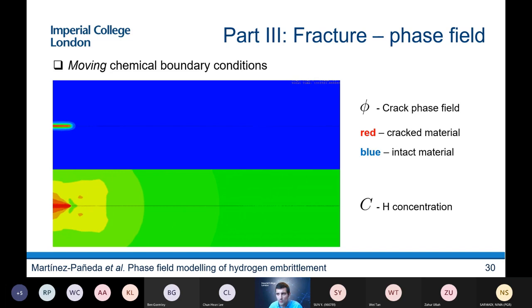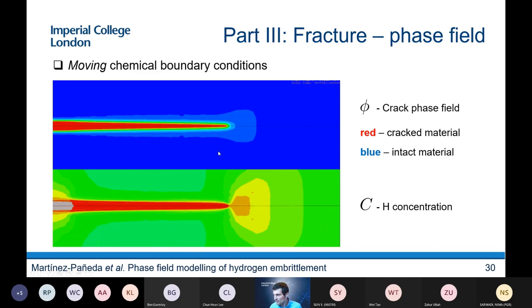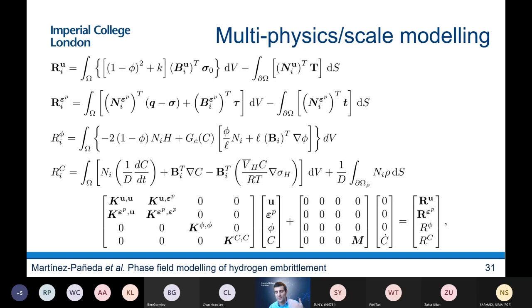Another thing that I want to say is that another element that we want to implement is what we call moving chemical boundary conditions. So imagine that you have a pipeline in the middle of the sea. The moment a crack propagates, the sea water is going to occupy the space. So the hydrogen is going to follow the crack, so to say. And this is what you see here. We can do that with a penalty approach. You see at the top, the crack propagating, and at the bottom is the hydrogen concentration. So you need to incorporate that if you want to know what happens after your crack has initiated. And I won't get into details, but if you're interested, these are what the residuals look like. So we're solving a problem where we solve for displacements, plastic strains, phase field, and hydrogen concentration as degrees of freedom.